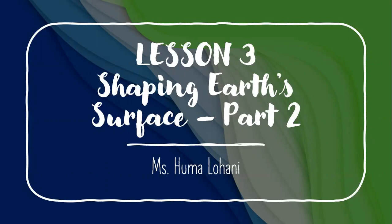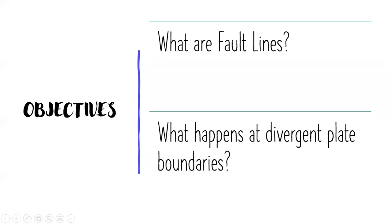Now we are going to move to the divergent plate boundaries — what is going to happen at the area where two plates are moving far away from each other? The objectives of part two are: to know what fault lines are and what happens at the divergent plate boundaries, which are the areas where two plates are moving far away from each other.